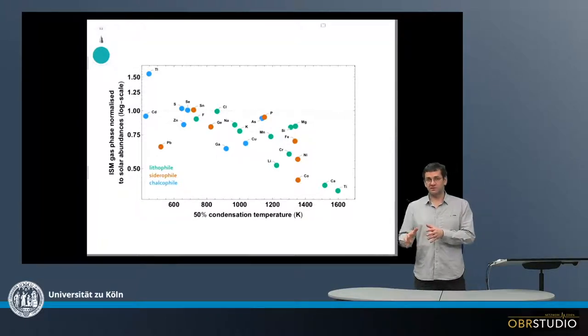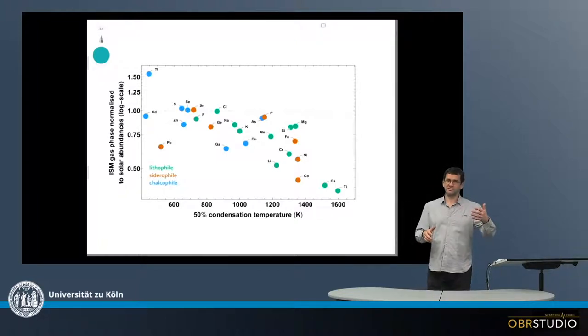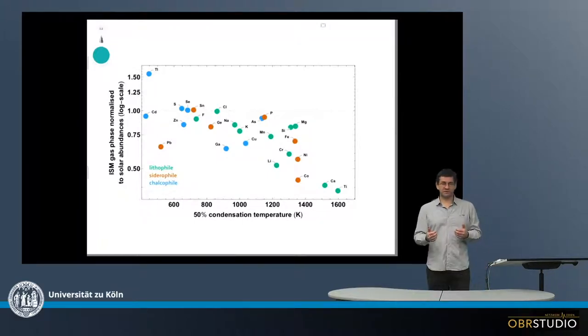Now when we look at chondrites, we look at the solids, not at the gas, because the gas is gone. If we could look at the gas, we could test whether this explanation is good and we would expect that the gas is enriched in volatiles and depleted in refractories. So if you want to test whether this incomplete condensation is a good explanation, we should look at the gas.